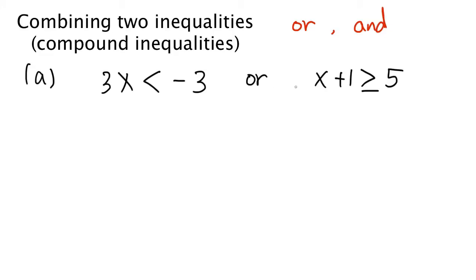In this first example, two inequalities are combined with OR. In the next example, we are going to see an example of inequalities combined with AND. If two inequalities are combined with OR, then any value of x satisfying either the first inequality or any value satisfying the second inequality are solutions of these compound inequalities.